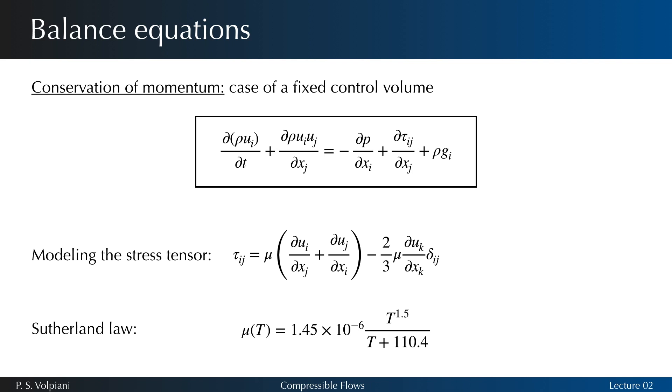Here, mu denotes the dynamic viscosity of the fluid and delta ij denotes the components of the unit tensor delta which satisfy delta ii equal 1 and delta ij equal 0 for i different than j. The viscosity mu is a property of the fluid considered but also depends on the local thermodynamic state of the flow. For temperatures below 3000 Kelvin, the air viscosity can be considered independent of the pressure and only the temperature dependence needs to be taken into account.